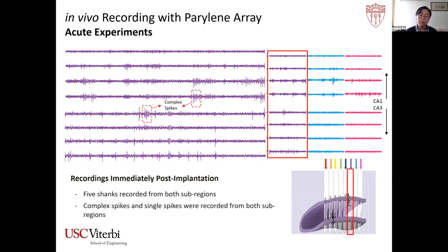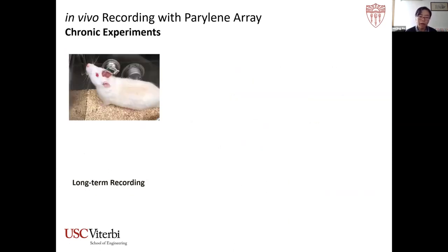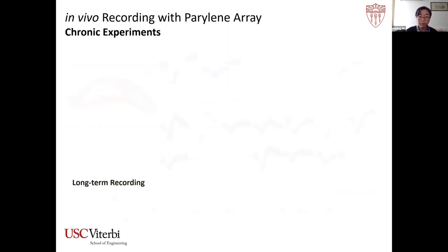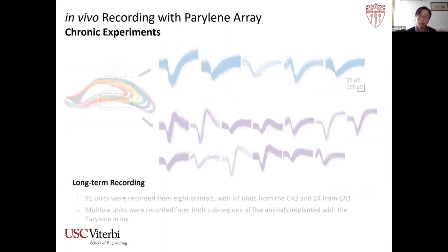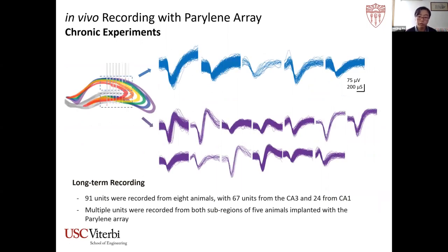Besides acute experiments, we also let animals recover and recorded neural activity during free behavior in an open field. Multiple units were recorded from both the CA1 and CA3 regions. In total, 11 animals were implanted; for 8 of them, chronic data were collected over periods ranging from 5 weeks to almost a year. A total of 91 units were recorded from those 8 animals — 67 from CA3 and 24 from CA1 — with multiple units from both regions in 5 animals.